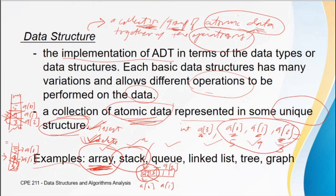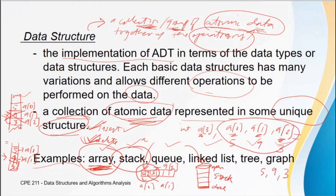The stack is a structure where the top is considered open — that is where you can insert and delete — and the bottom is closed. Say this stack can hold 4 elements. To do insertion, you push a new element into the stack. For example, pushing the sequence 5, 9, and 3: first you push 5, then 9, then 3. That is how you insert. The insertion operation is called push for the stack data structure, and the deletion operation is called pop.